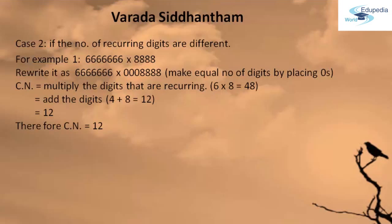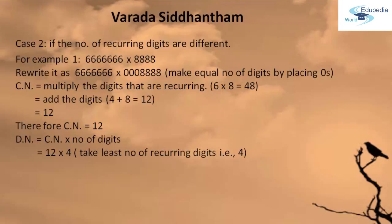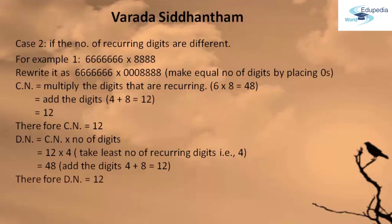Coming to the next key term, DN — it is called the Diminishing Number and it is got by multiplying the CN with the number of digits that are recurring. The CN we have got is 12, and the number of digits we have to take is 4. Because whenever you are finding the DN, you have to take the lesser number of recurring digits, which is the multiplier 8,888 — there are only 4 digits. So 12 into 4 gives 48 again. It is a two-digit number, so add up the digits: 4 plus 8 gives 12. Therefore DN is 12.